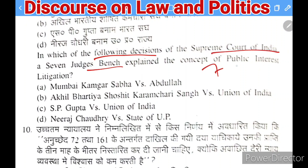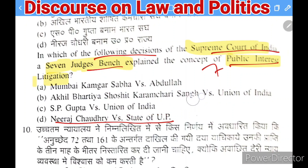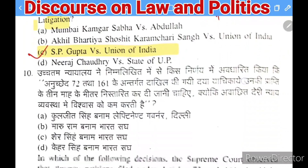Next question: in which decision of the Supreme Court of India did seven judgments explain public interest litigation? Options: Mumbai Kamgar Sabha vs Abdulbhai, Akhil Bharatiya Soshit Karmachari Sangh vs Union of India, S.P. Gupta vs Union of India, or Neera Chaudhary vs State of UP. The right answer is S.P. Gupta vs Union of India.